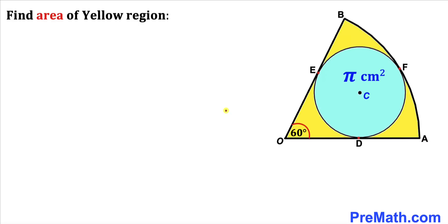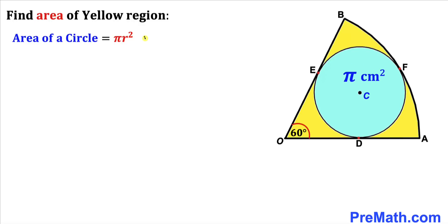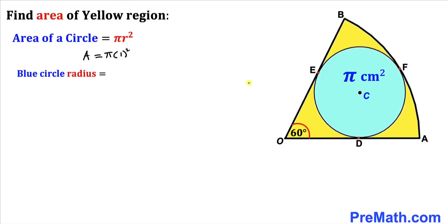We know the area of the blue shaded circle is π centimeter square. Recalling the area of a circle formula: area = π r². In our case, the area equals π, which we can write as π times 1², so the radius of this blue circle is 1 centimeter.